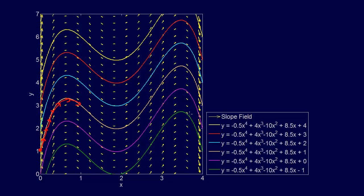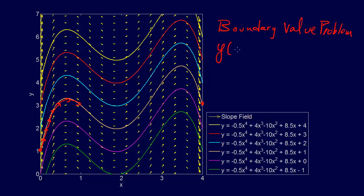What if we're not given that initial value? What I asked is: what if we were given the last point instead? Now we don't know how to do it. This is a boundary value problem, and this is a Dirichlet boundary condition — just to remind us of the nomenclature — because we're given y of 4, and let's say that's the other endpoint we care about.